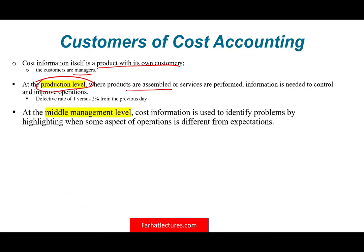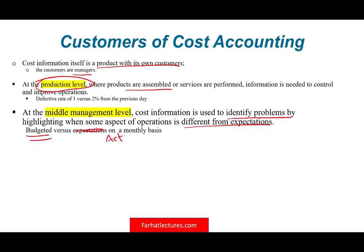At the middle management level, cost information is used to identify problems by highlighting aspects of operation that differ from expectation — specifically, budgeted versus actual. What did we plan to do, and what actually happened? For example, managers can review on a monthly basis to see if there is any deviation from the budgeted versus the actual.